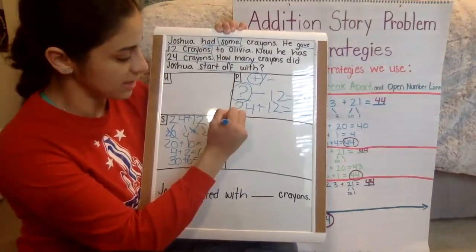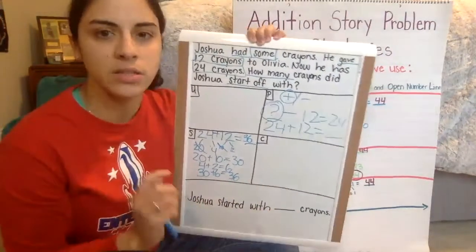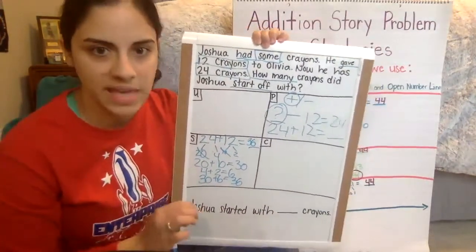So I'm going to write 36 here, but we're going to solve it a second way just to make sure we get the same answer and we didn't make any mistakes.